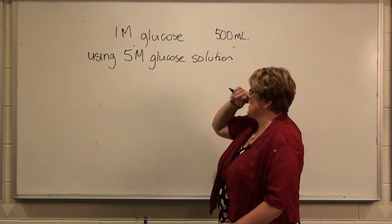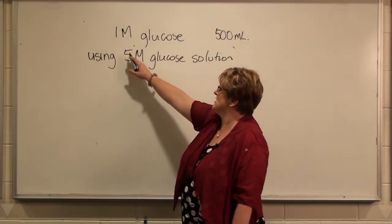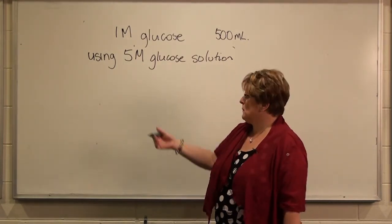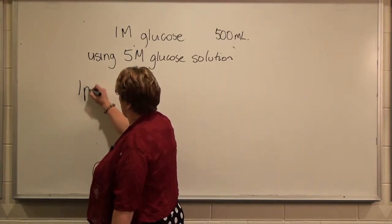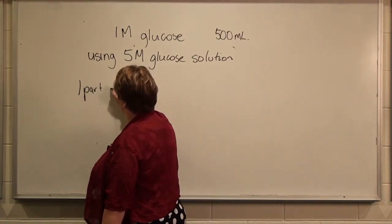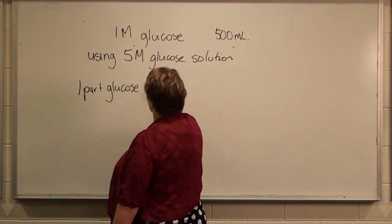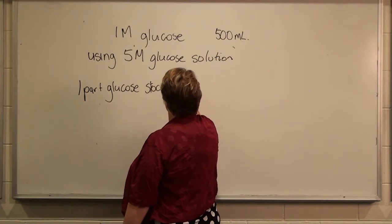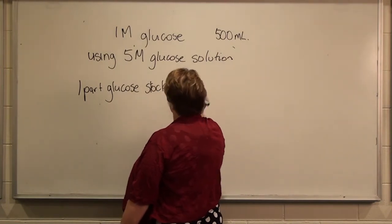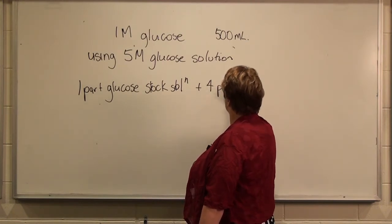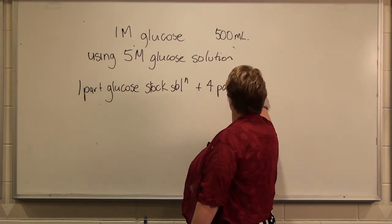Again, if you are mathematically inclined, you could see that you need to dilute it five-fold. So you would be thinking about taking one part of the glucose stock solution and adding 4 parts water.